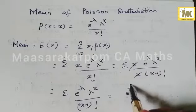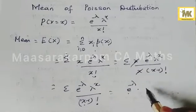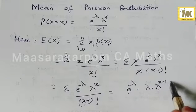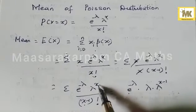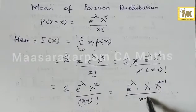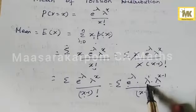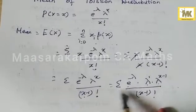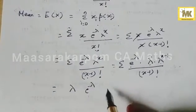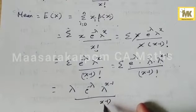That is equal to e^{-λ} times — since x-1 is present here, we need to express lambda accordingly. This becomes lambda · λ^{x-1}. So grouping, we write lambda · e^{-λ} · λ^{x-1} / (x-1)!, and since lambda is independent of the summation, we factor it out.